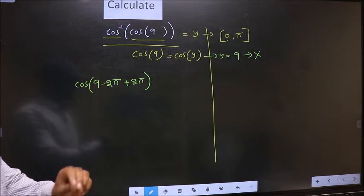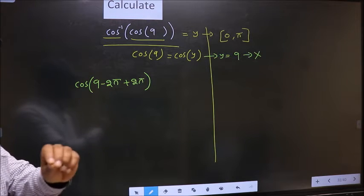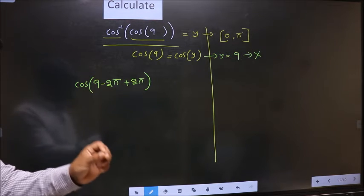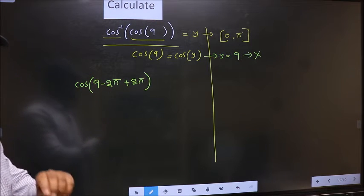Important point here. In cos inverse sums, we should only subtract even multiples of pi. That is 2 pi, 4 pi, 6 pi, 8 pi like that. Remember this point.